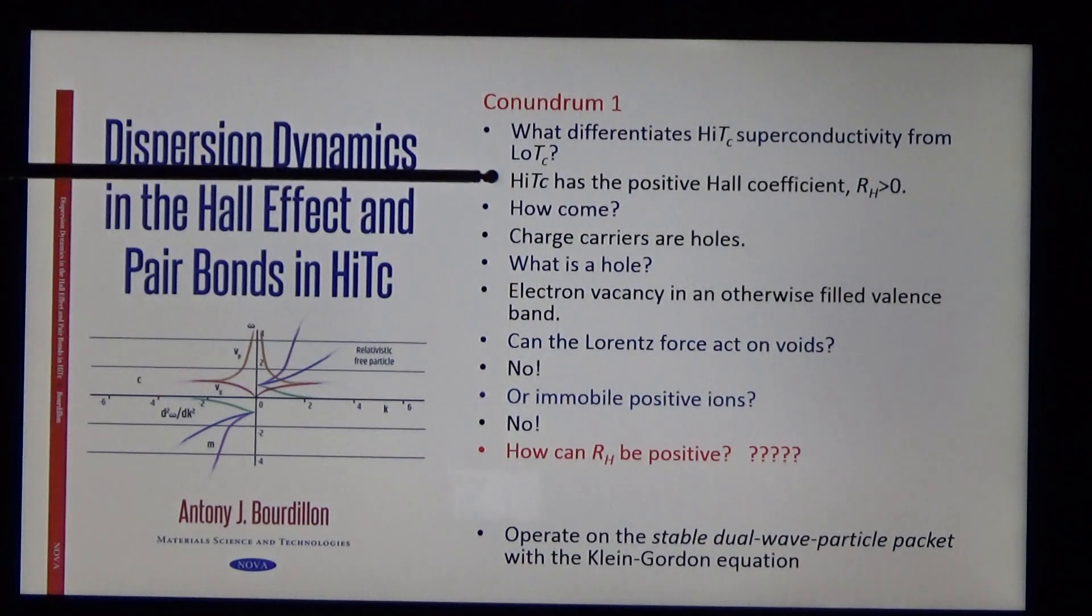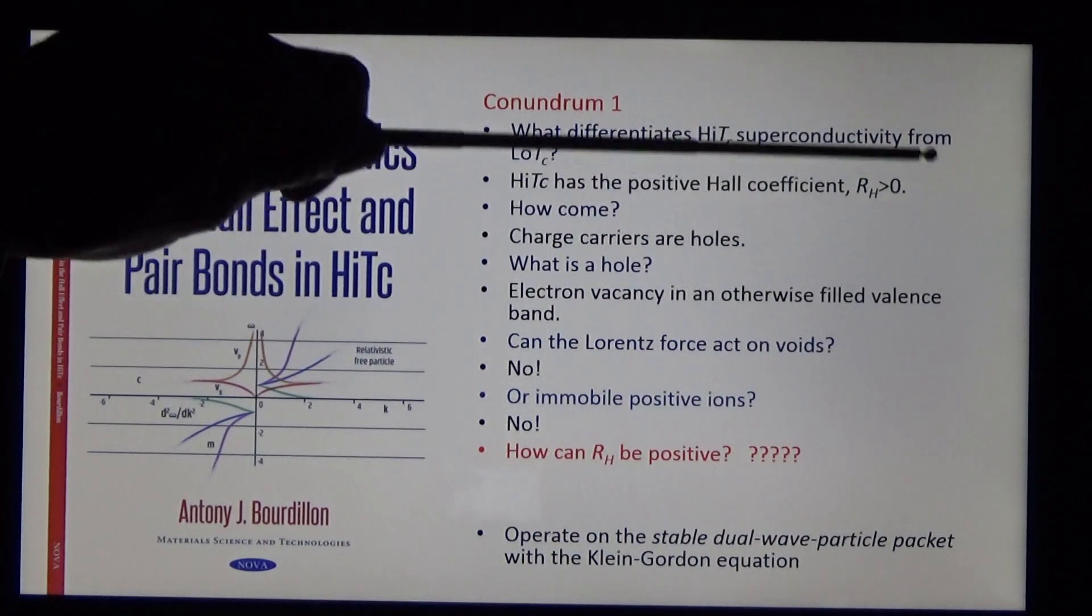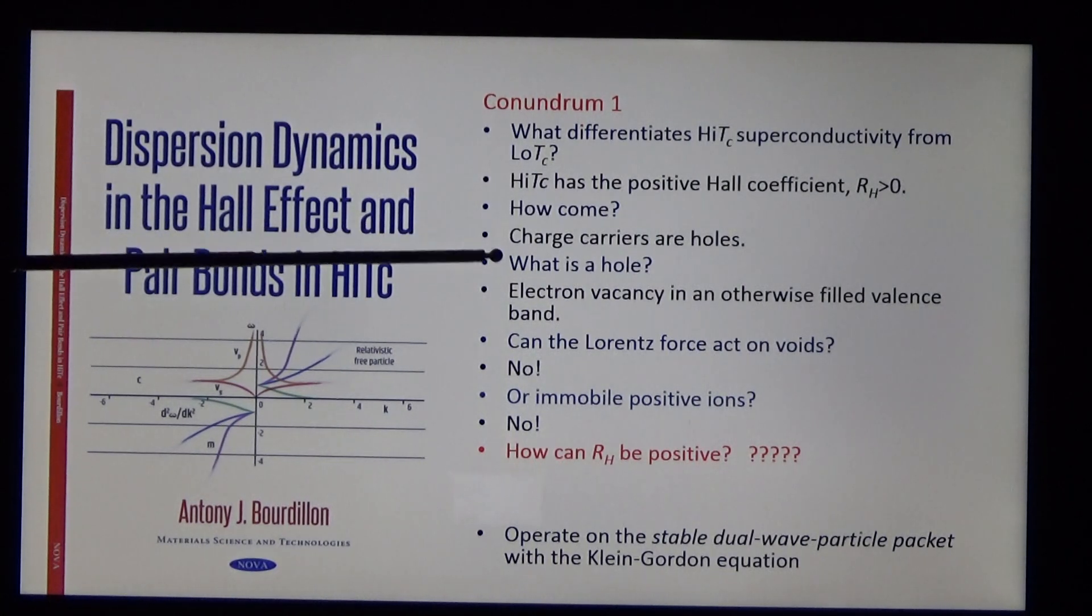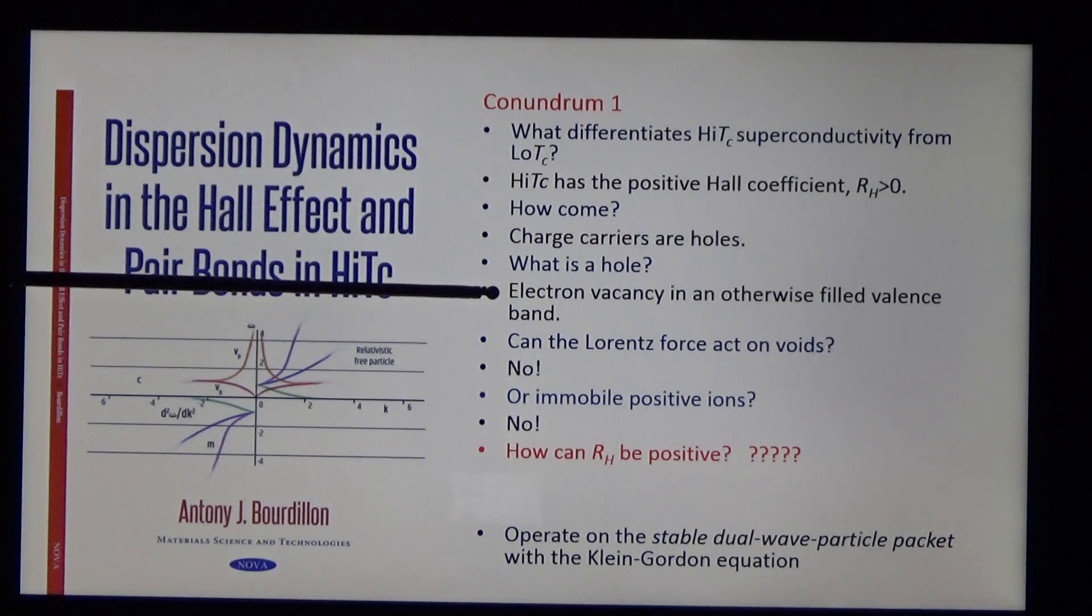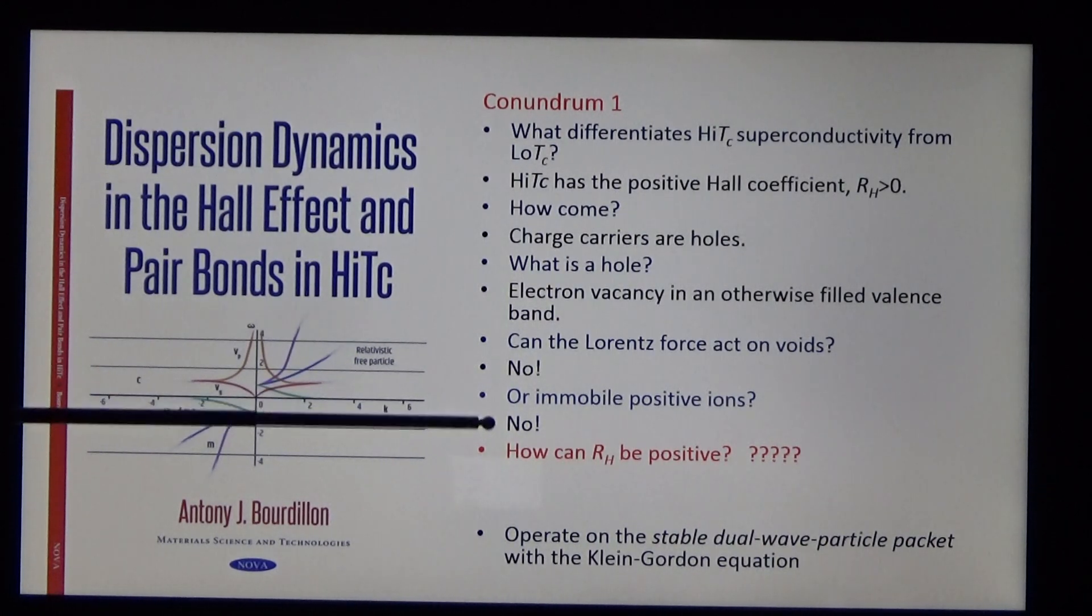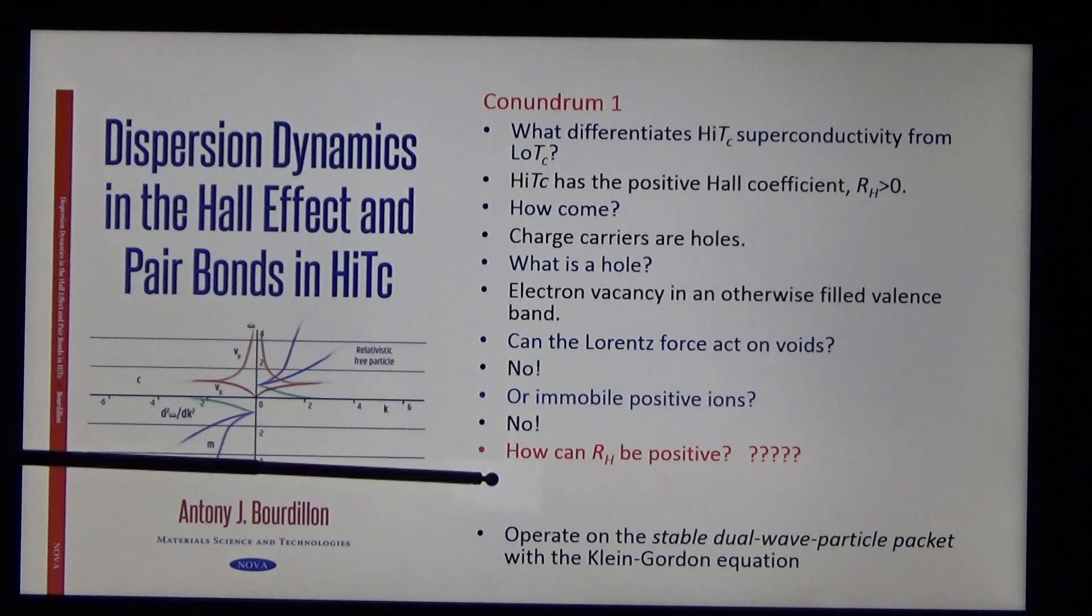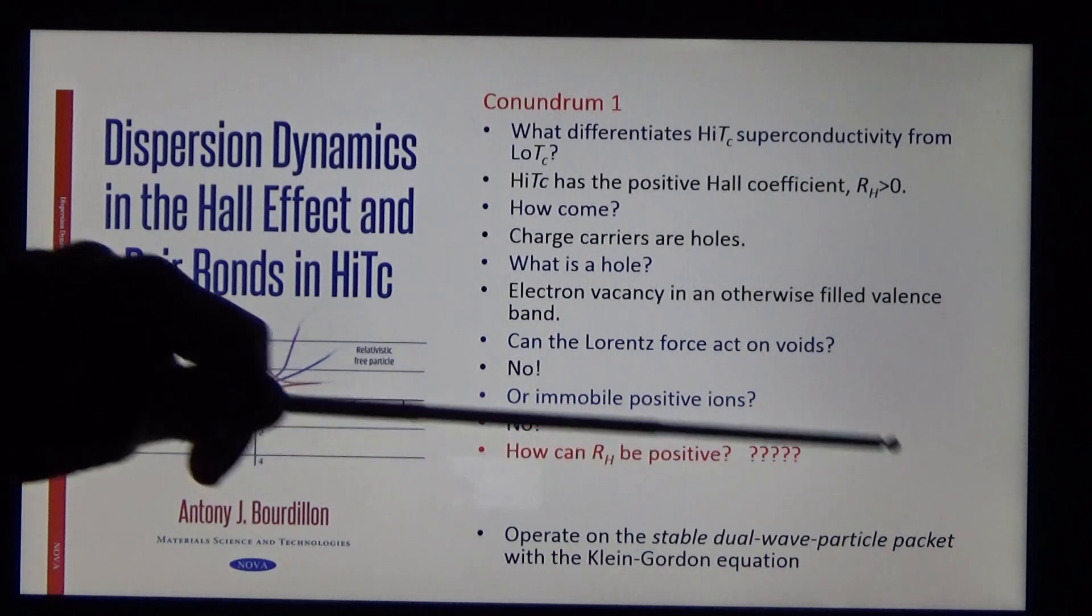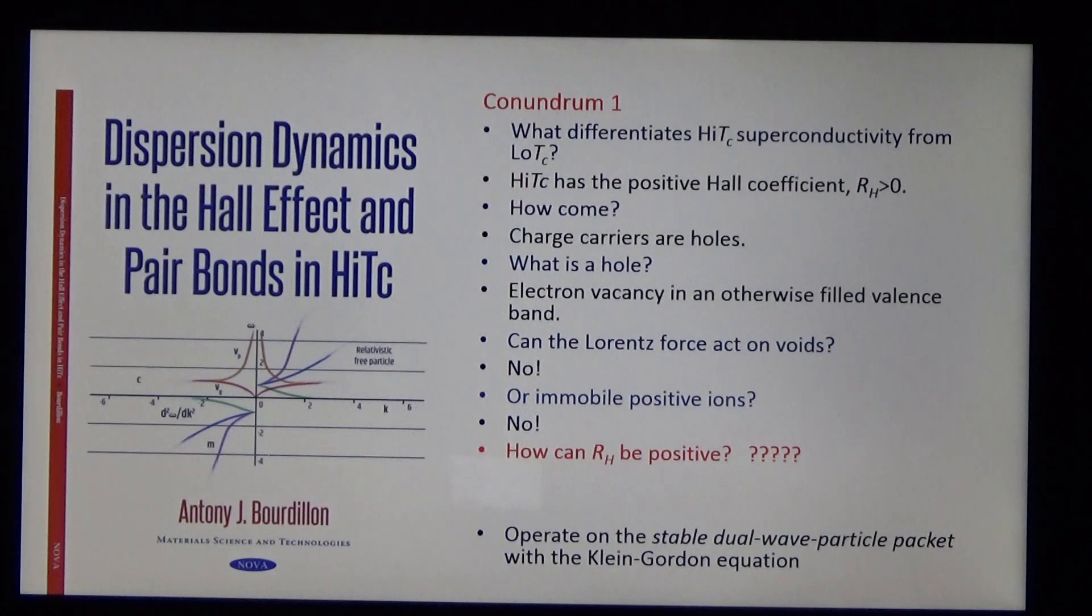The main difference is that high TC has the positive Hall coefficient. How come? Charge carriers are holes. What is a hole? An electron vacancy in an otherwise filled valence band. Can the Lorentz force act on voids? No. Or immobile positive ions? No. How then can RH be positive? To sort it out, we operate on the stable dual wave particle packet with the Klein-Gordon equation.